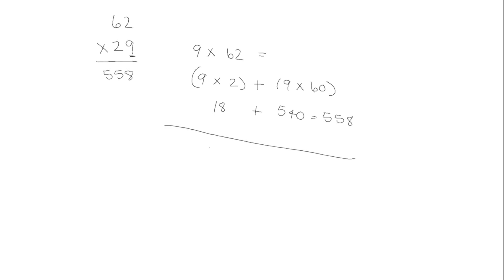Then for our second problem, we have 20 times 62. So 62 times 2 is 124, so 62 times 20 would be 1,240 as our second partial product. When we add those together, we get a total product of 1,798.